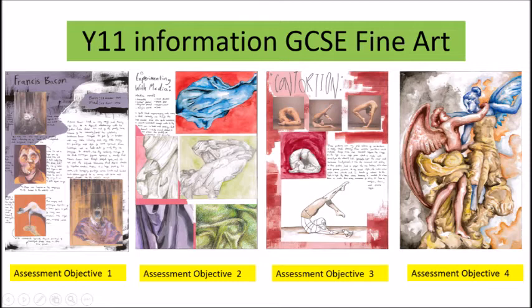Assessment objective 2 is also a very important assessment objective because it covers how well your child can refine their work, trying things more than once to show improvements. Assessment objective 3 is where your child records their ideas. They can record in many different ways, not just drawing, including photography. Within this area, your child will also need to annotate their work.